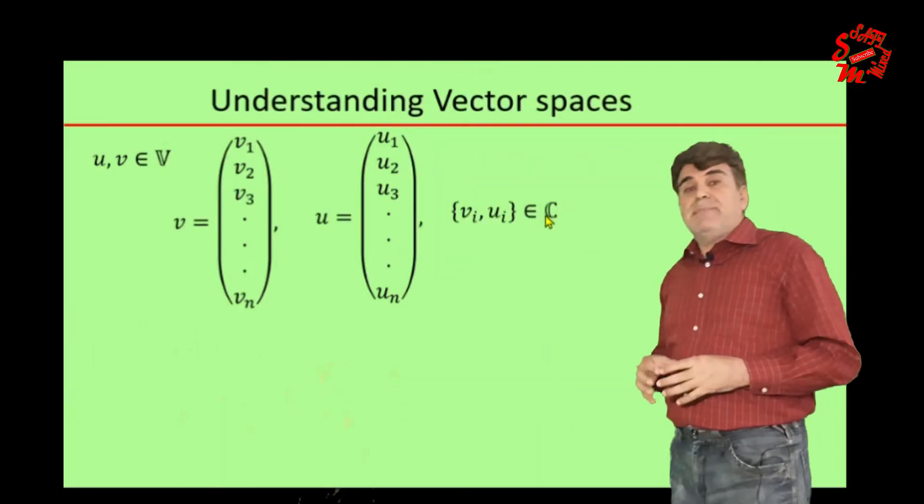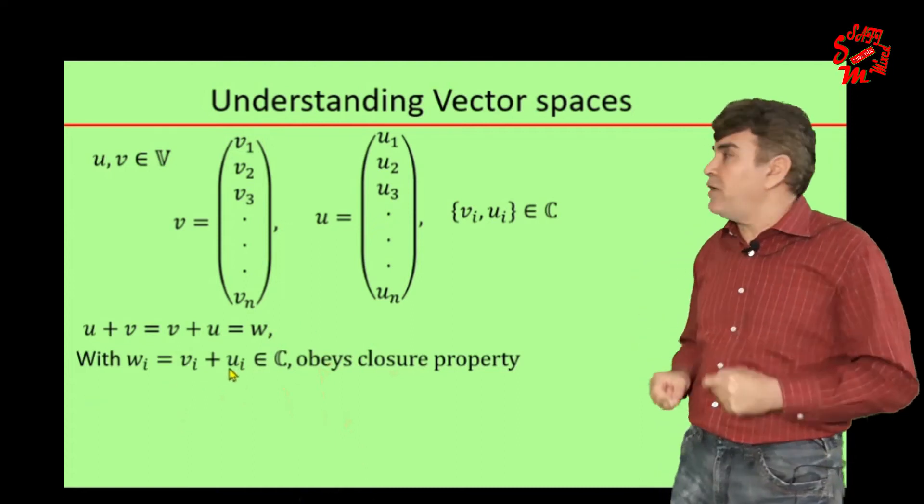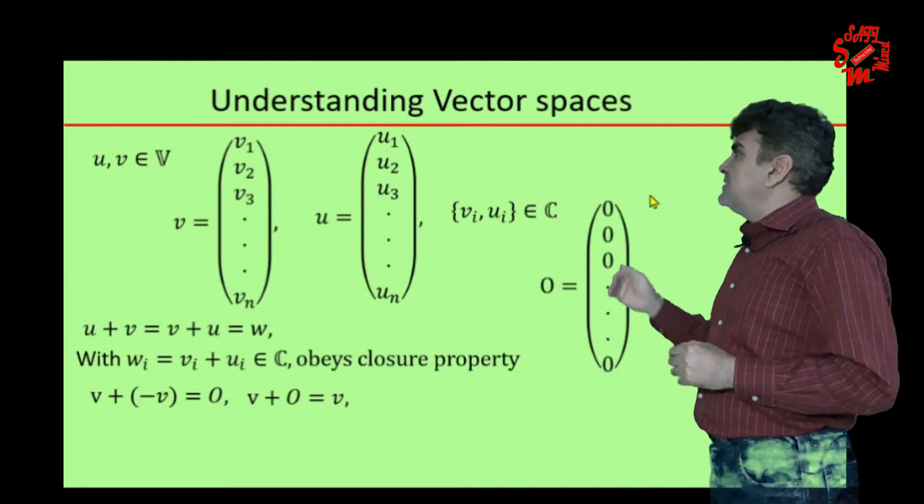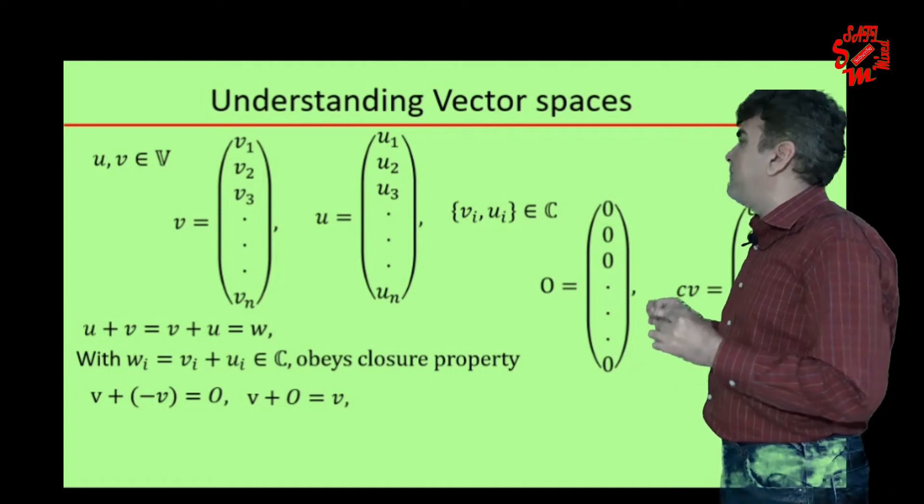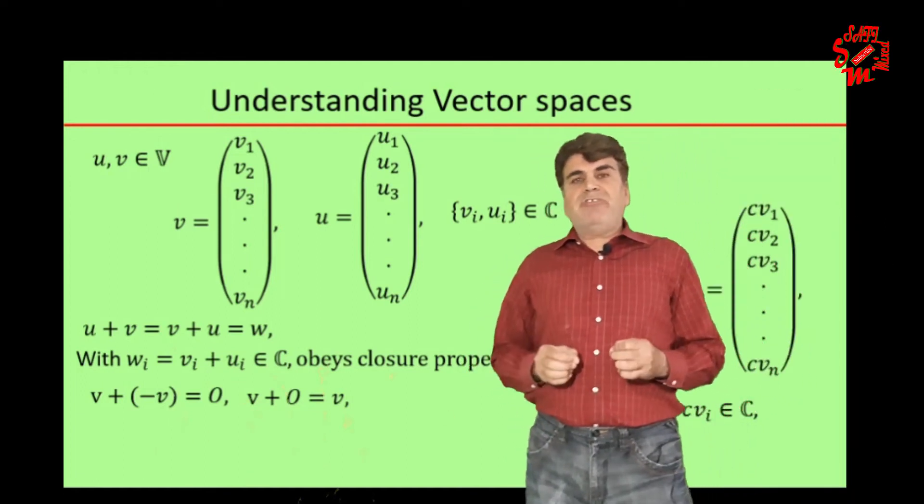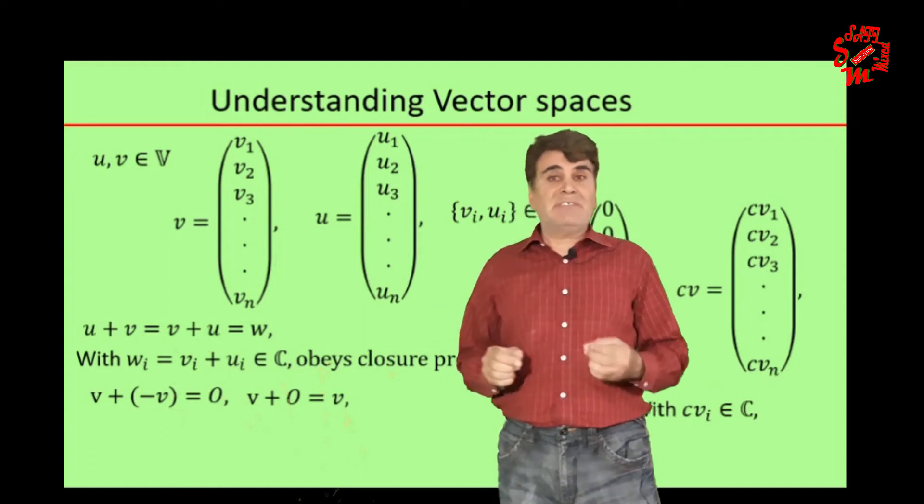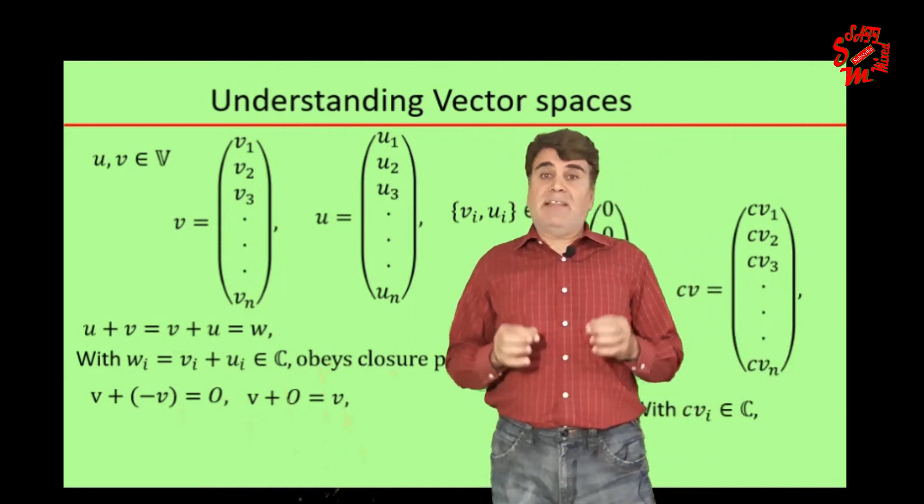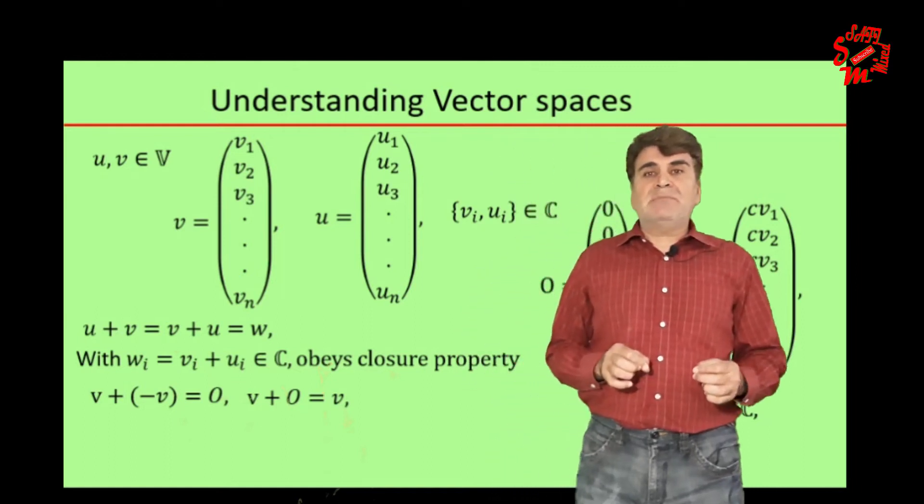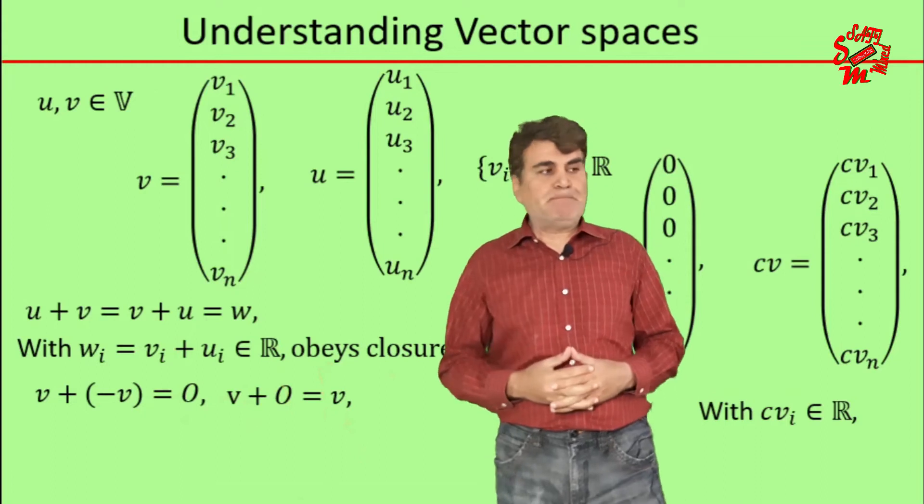Similarly, if I consider the field F to be the set of all complex numbers, then I can define two vectors v and u belonging to V such that the entries vi and ui belong to C. Then following the same procedure as we did for the previous example, one can prove that this space also constitutes a vector space because all the axioms are satisfied. Thus, for the elements of V to be column matrices and the field F to be either the set of real numbers or the set of complex numbers, this validates all the axioms for a vector space. Therefore, we say that the field of real numbers and the field of complex numbers constitute two different spaces: one space is called real vector space, and the other space is called complex vector space.